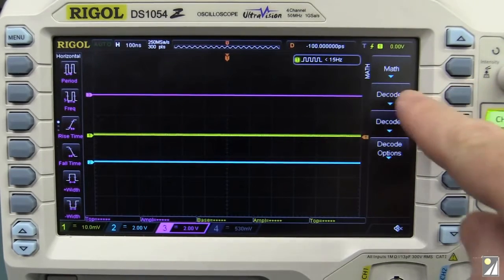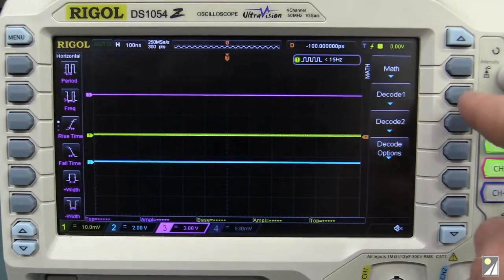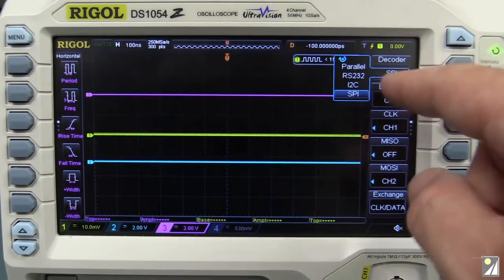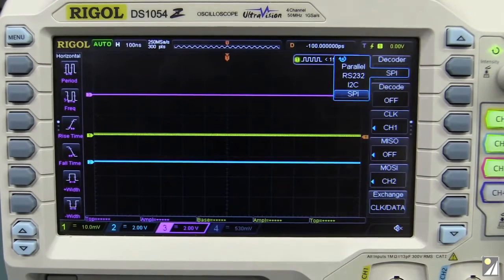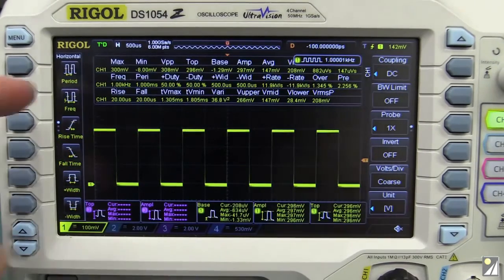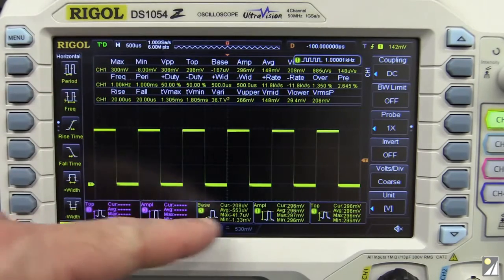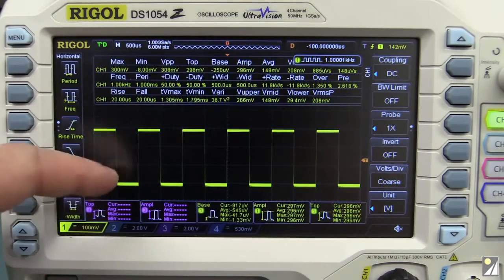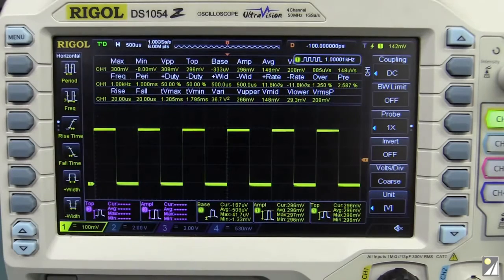It really has very nice serial decoding and trigger capability. You can do SPI, I2C and RS-232 in parallel. But unfortunately, this is an optional extra. And it really does have an amazing range of measurement and statistics capability. It's absolutely phenomenal for a low-end scope like this. Fantastic.